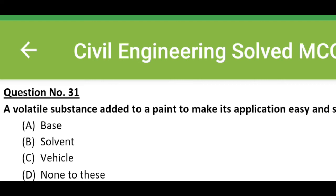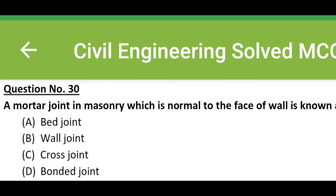Option C, vehicle. Option D, none of these. The correct answer is option B, solvent. A mortar joint in masonry which is normal to the face of wall is known as: Option A, bed joint. Option B, wall joint.